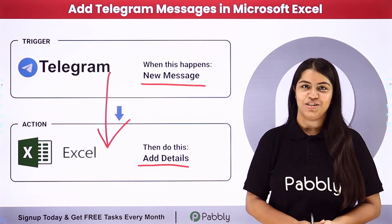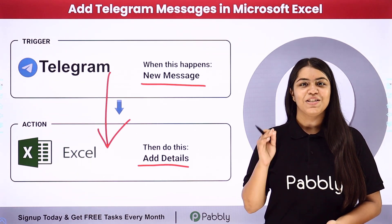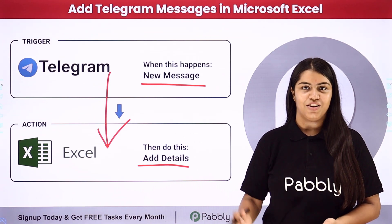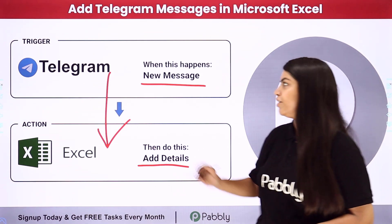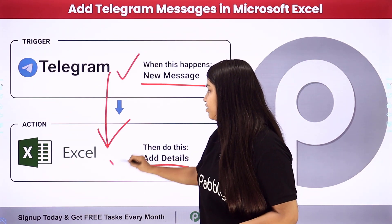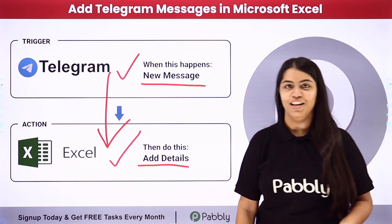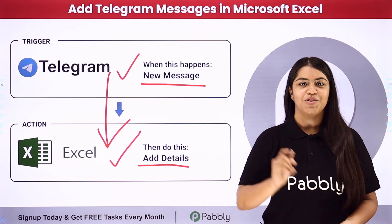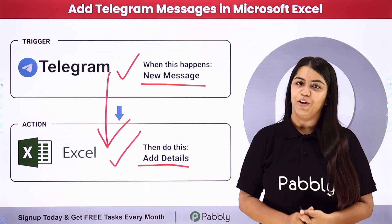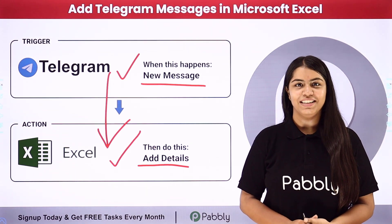To create this connection without knowing any programming or coding language, we are going to use Pabbly Connect. It is an amazing automation software. In Pabbly, we have the concept of Trigger and Action. For Trigger, we are going to use Telegram, and for Action, we are using Excel. So if you also wish to learn this process step by step, follow me through the screen.